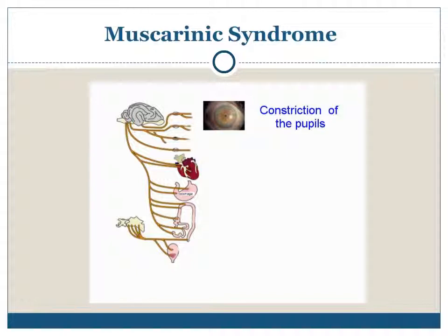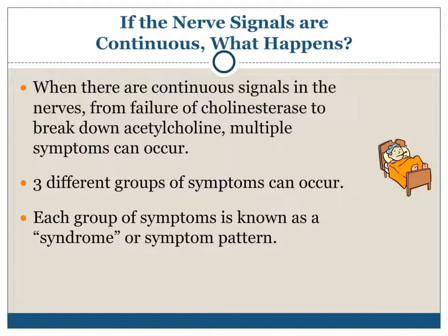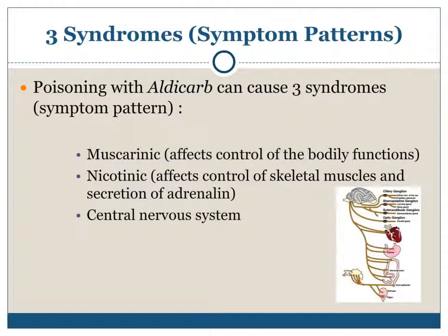When there are continuous signals in the nerves from failure of cholinesterase to break down acetylcholine, multiple symptoms can occur. Three different groups of symptoms, each known as a syndrome or symptom pattern, can result. Poisoning with aldicarb can cause three syndromes: muscarinic, which affects control of bodily functions; nicotinic, which affects control of skeletal muscles and secretion of adrenaline; and central nervous system effects.